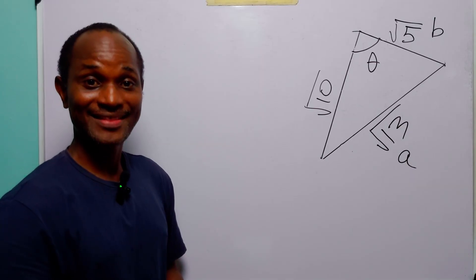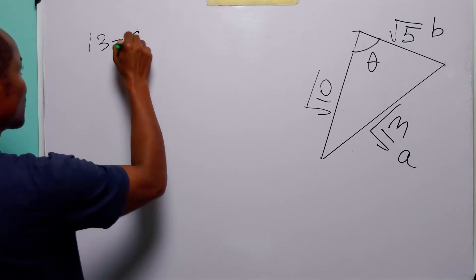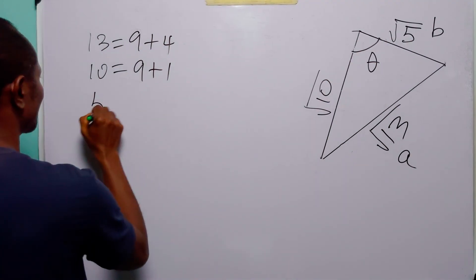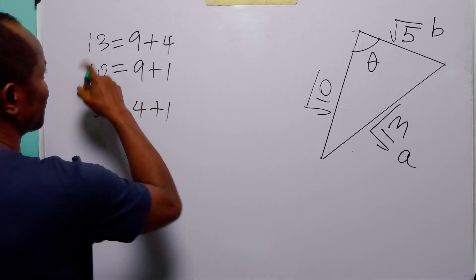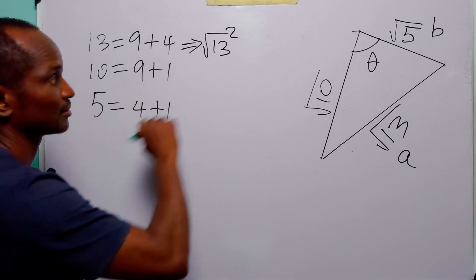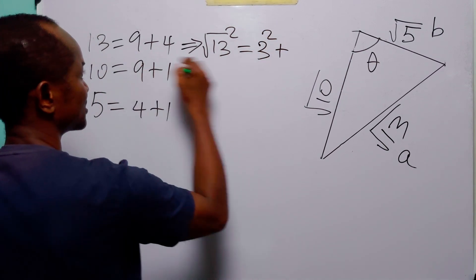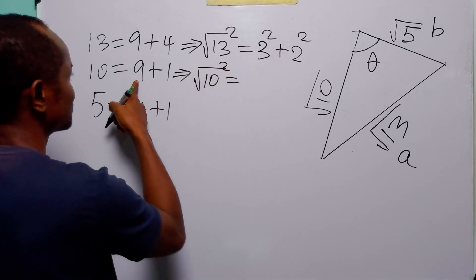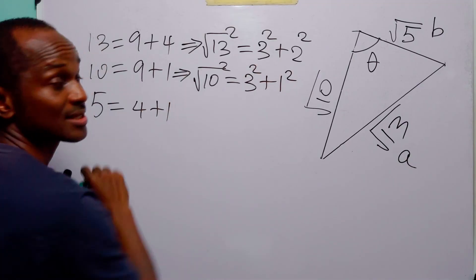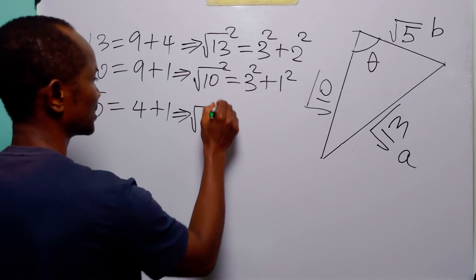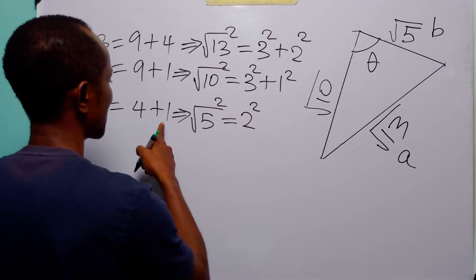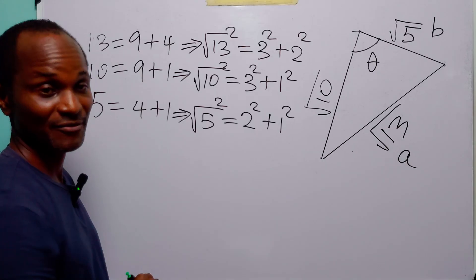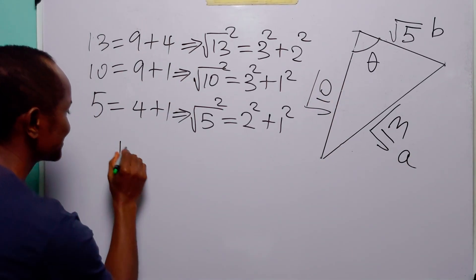In the third and final method, which I think is the easiest: notice that 13 = 9 + 4, 10 = 9 + 1, and 5 = 4 + 1. We can write √13 as the hypotenuse of a 3-2 right triangle, √10 as hypotenuse of a 3-1 right triangle, and √5 as hypotenuse of a 2-1 right triangle. These are all representations of the Pythagorean theorem, meaning this triangle is contained inside a square.